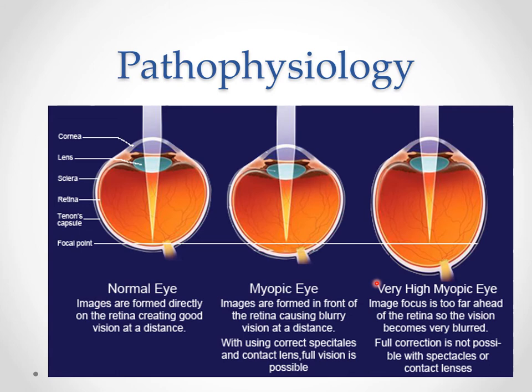Physiologic myopia, or naturally occurring myopia, develops in children sometimes between the ages of 5 to 10 years old and gradually progresses until the eye is fully grown. Rather than stabilizing, the eye can continue to grow at an abnormal rate, leading to degenerative changes.